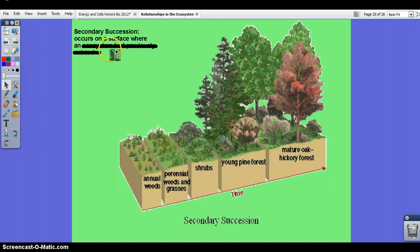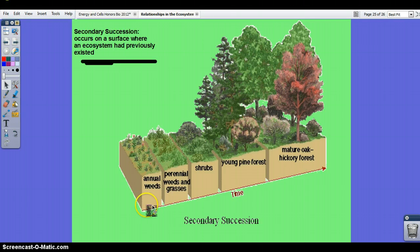In secondary succession, life existed prior. So you're going to have soil, and inside soil, think about it, there's microorganisms and nutrients, but again, you will see the growth. Consider this grass that you don't cut, weeds start to grow. After a while, if you don't cut it, you'll see higher grasses, shrubs, pine forest, and then eventually a mature oak forest.